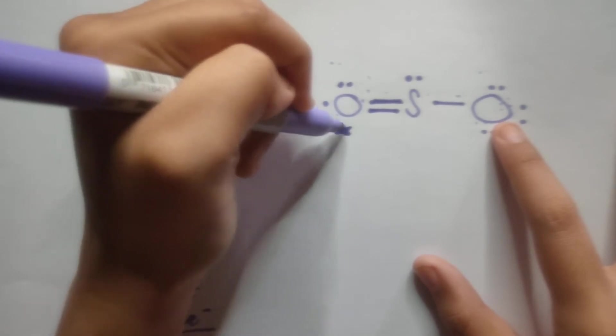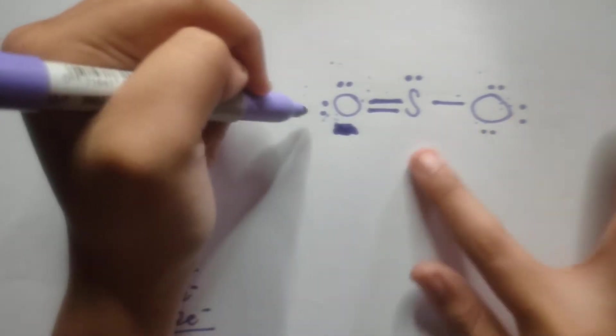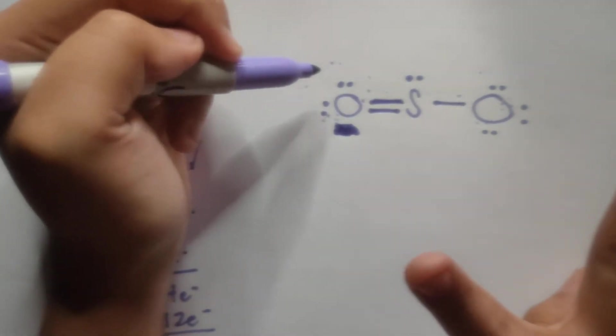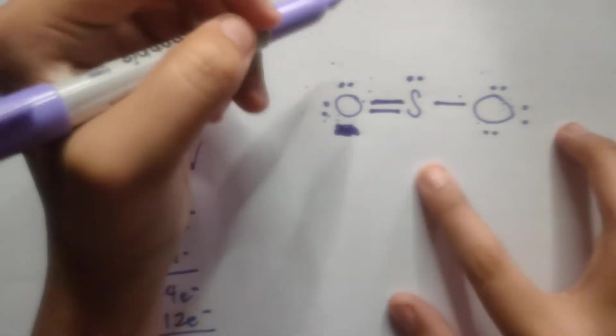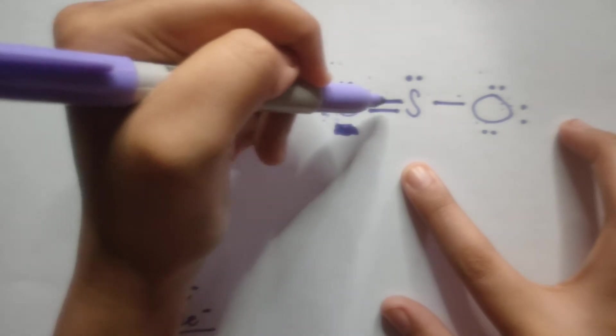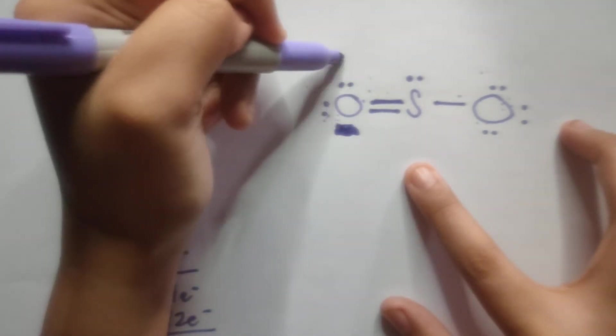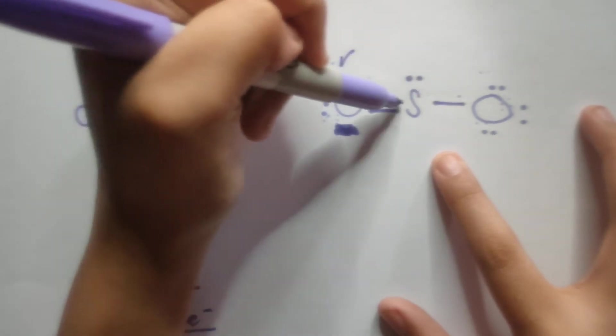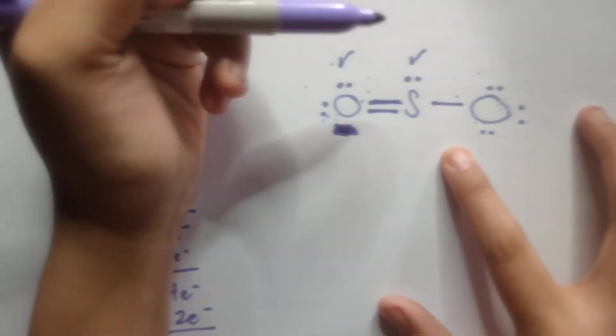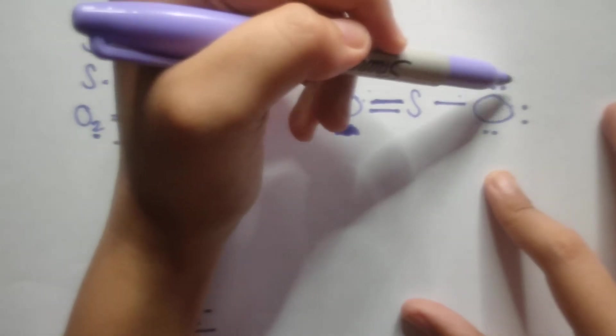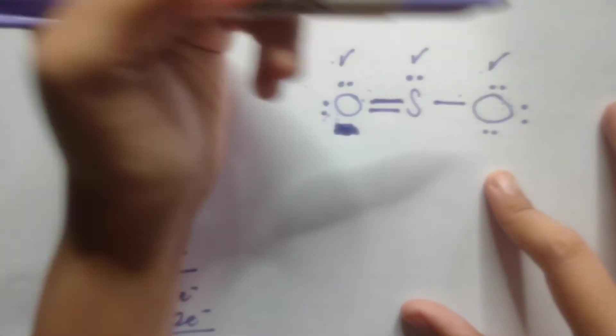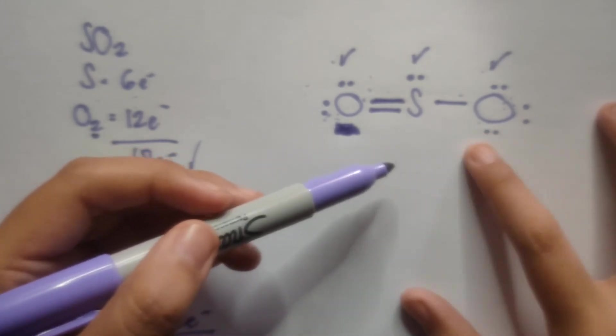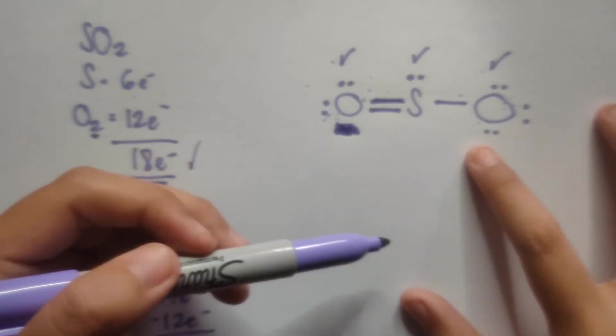Now, after doing that, so we already set apart, it's no longer there. This oxygen will only have 2 lone pairs instead of the original 3. So 1, 2, 3, 4, 5, 6, 7, 8. This one follows the octet rule. Let's check sulfur. 1, 2, 3, 4, 5, 6, 7, 8. It follows the octet rule. Let's check this oxygen right here. 1, 2, 3, 4, 5, 6, 7, 8. So it also follows the octet rule. So therefore, this will be the correct structure of your sulfur dioxide.